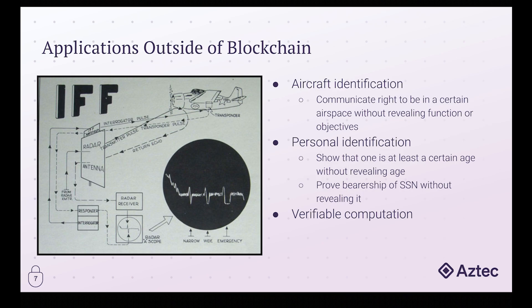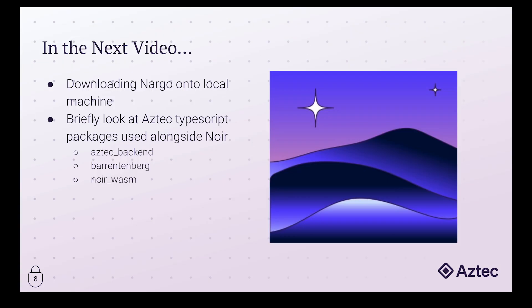And last is the topic of verifiable computation, which we touched on earlier — a way of proving that you've completed some computational process correctly without revealing anything else related to it. That concludes our first video. In the next video, we're going to look at downloading the Nargo command line toolset onto our local machine to show how it can be used to create and interact with Noir proofs. We'll also take a look at the Aztec TypeScript packages and show how they can be used alongside Noir. Thanks for watching, and I look forward to the rest of the series with you.